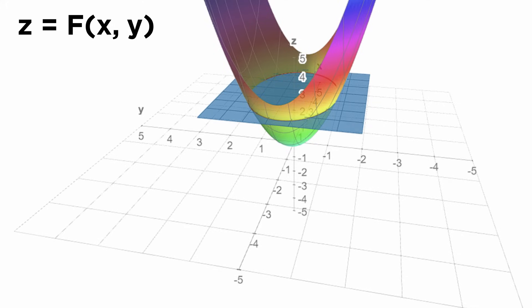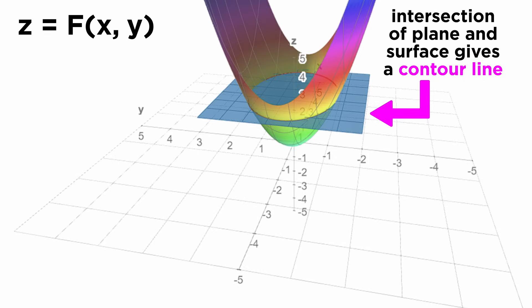If we take a horizontal slice across this surface at some height, represented by this plane, then the plane will intersect the surface at some set of points that form a curve, called a contour line. Starting at any point on this contour line, if we take steps around the surface but still stay on the line, the value of the function f(x,y) remains constant.